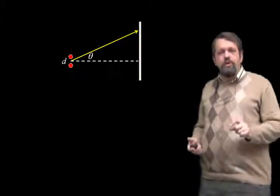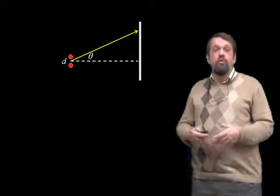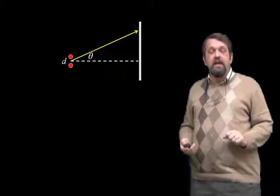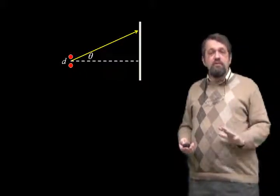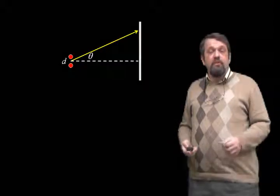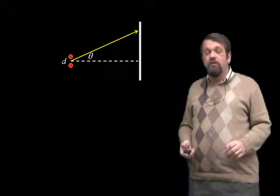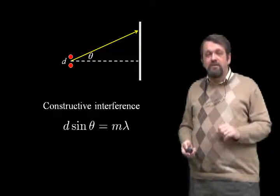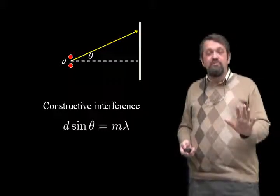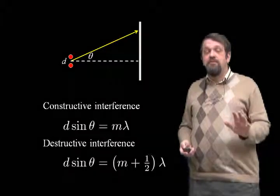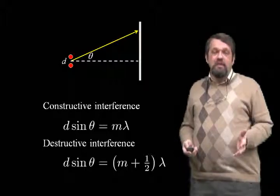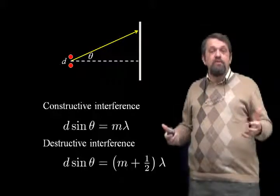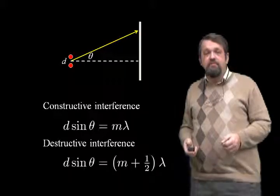This lets us write the constructive and destructive interference conditions in a neat way. We have two sources or two slits producing light going out at an angle theta. It's constructive interference where d·sinθ equals M times the wavelength, and it's destructive interference if d·sinθ equals (M + 1/2) times the wavelength. In either case, M represents an integer, and the wavelength is the wavelength of whatever wave we're talking about.